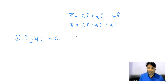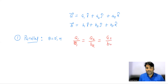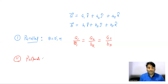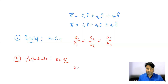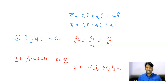The condition for two vectors to be parallel is: a1/b1 = a2/b2 = a3/b3. The condition for two vectors to be perpendicular (theta = 90°) is: a1*b1 + a2*b2 + a3*b3 = 0.